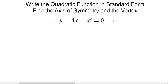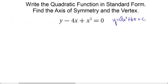Remember that standard form is y equals ax squared plus bx plus c, where a is the coefficient of x squared, b is the coefficient of x to the first power, and c is the constant. In order to have the quadratic function in standard form, y needs to be the only thing on the left side of the equation, and everything else on the right. The first thing that needs to go to the right side is our ax squared term — this positive x squared.